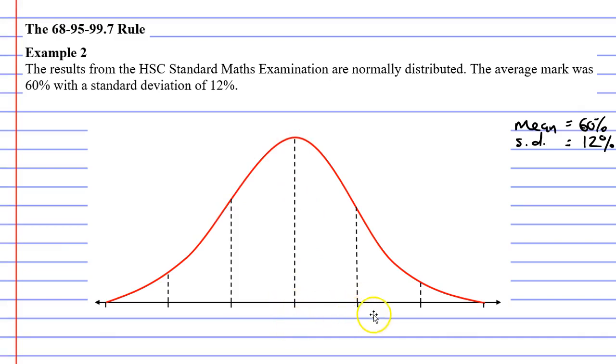You need to have three intervals to the right, as well as three intervals to the left of your mean, like I've drawn here. So we'll label our mean as 60%, and we'll even write down that that is the mean.